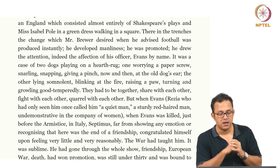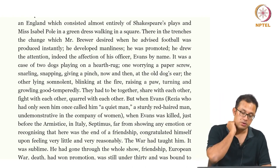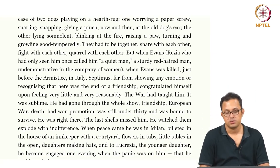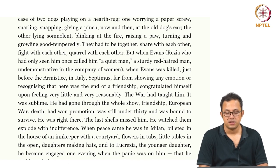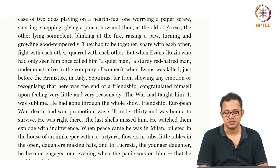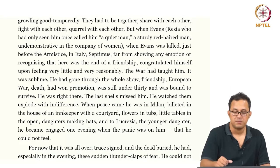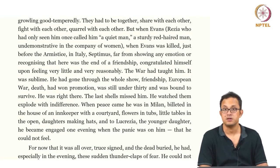What this passage shows specifically is how this constructed masculinity is essentially engineered through certain training rituals — physical training, moral training, emotional training — to create this package of masculinity which does not feel much, does not express emotions in front of women, and holds reason at a very high premium. The war had taught him — it was sublime. He had gone through the whole show: friendship, European war, death, had won promotion, was still under thirty, and was bound to survive. When peace came, he was in Milan, billeted in the house of an innkeeper. And to Lucrezia, the younger daughter, he became engaged one evening when a panic was on him that he could not feel.